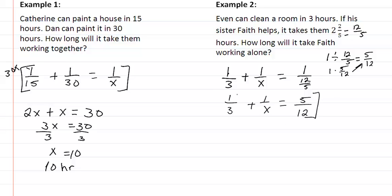Multiply by our common denominator, which is going to be twelve-x. And we are going to get four-x plus twelve, equal to five-x. Solve our equation by subtracting four-x on both sides. And we are going to get twelve is equal to our x. That means it takes twelve hours for Faith to do the job alone.